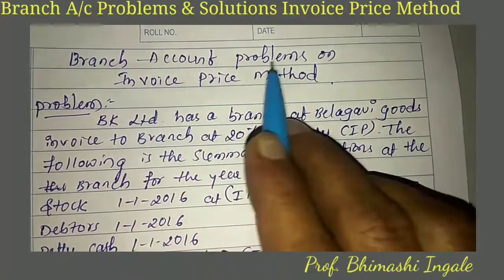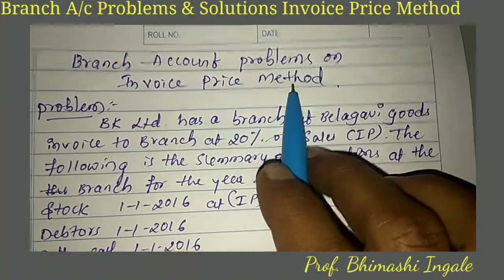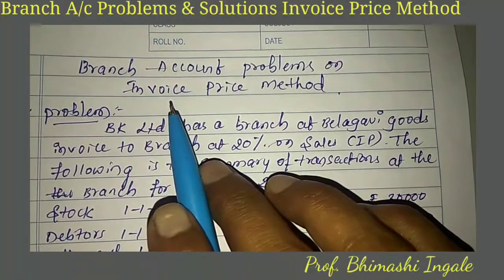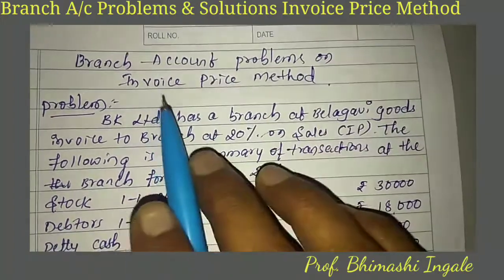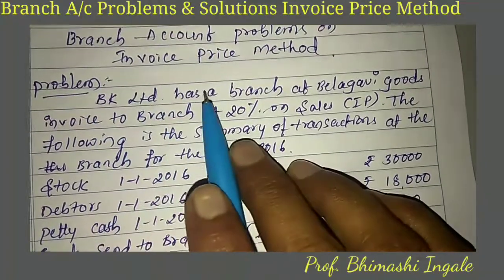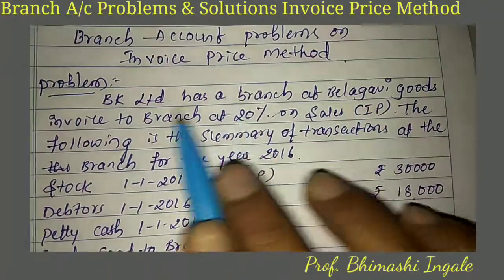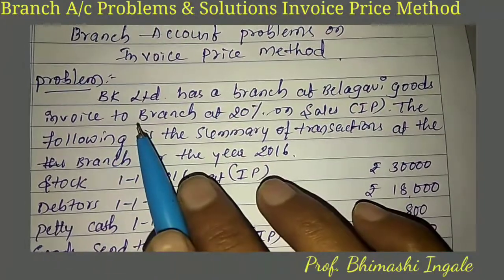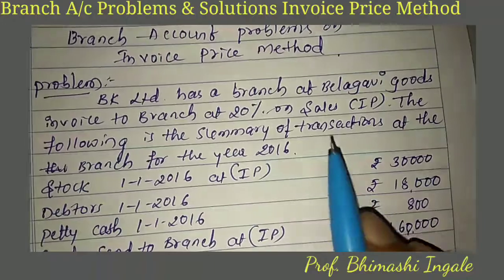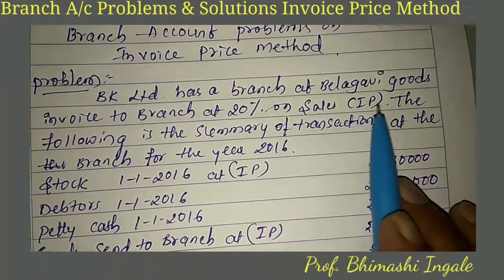Branch account problems on invoice price method. This is a second semester student problem. BK Limited has a branch at Badagavi. Goods are invoiced to the branch at 20% on sales. IP means invoice price.